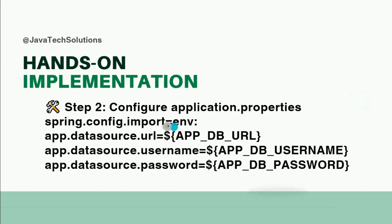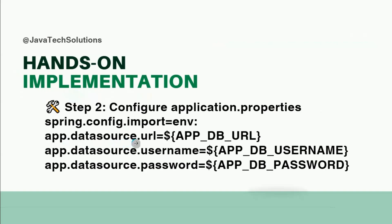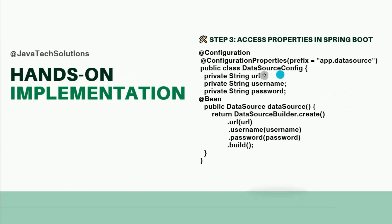Step two is to add the property `spring.config.import=env:` in your configuration, where you directly use placeholders for `url`, `username`, and `password`. Step three is to access those properties in Spring Boot using a prefix — for example, `app.datasource` — so all three properties share that prefix. The configuration will automatically pick up the values for `url`, `username`, and `password`.